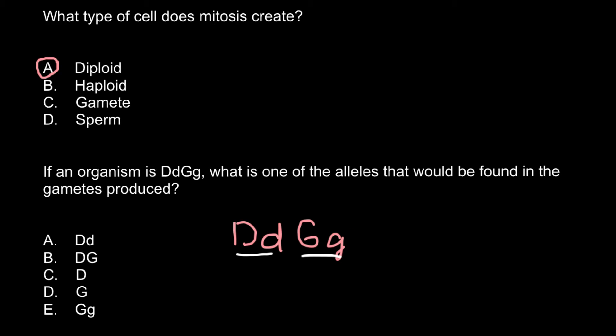So these two genes can produce haploid gametes. And one of the variants of the allele has to be present in a gamete. So the first variant would be capital D and capital G. Second variant would be capital D and small g.